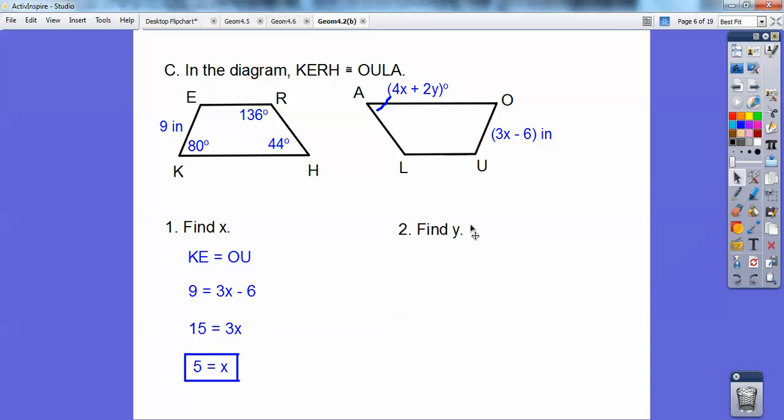And then let's go find Y. I'm going to plug in X equals 5 right there and solve for Y. Angle A is the last letter, so angle A would be equal to the last letter here, angle H. So angle A is equal to 44 degrees, so 4X plus 2Y equals 44 degrees. Don't forget, X equals 5, and you get Y equals 12.